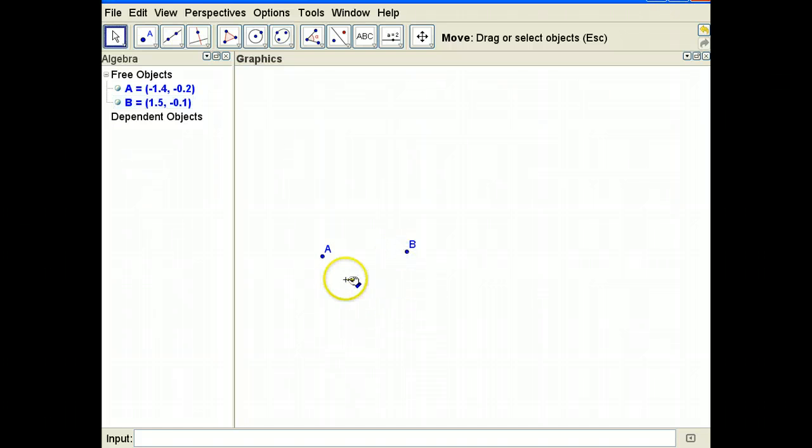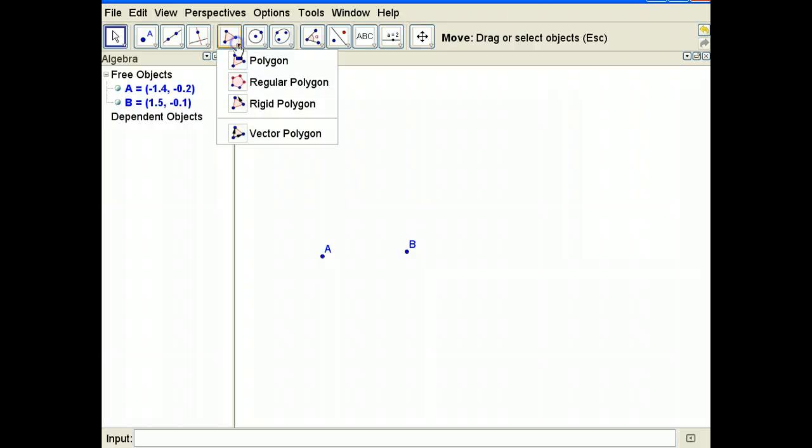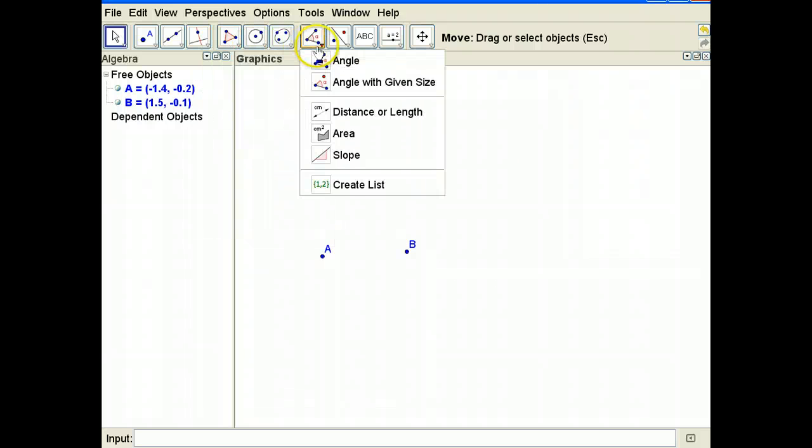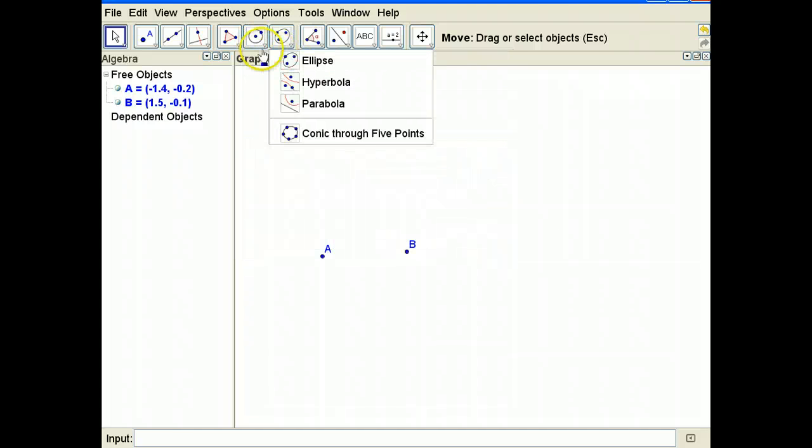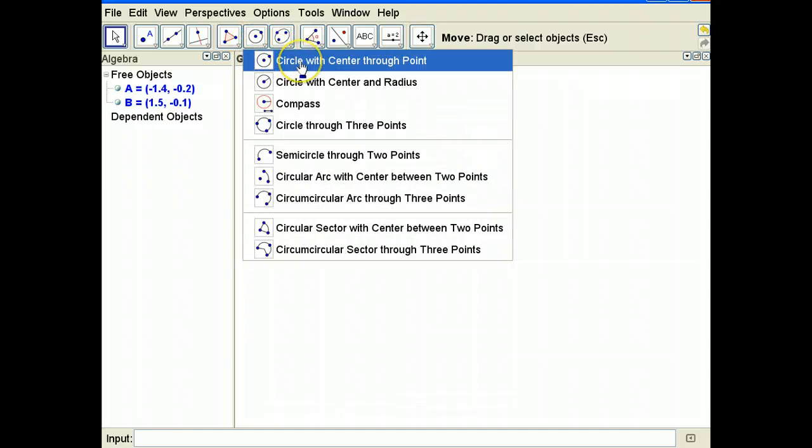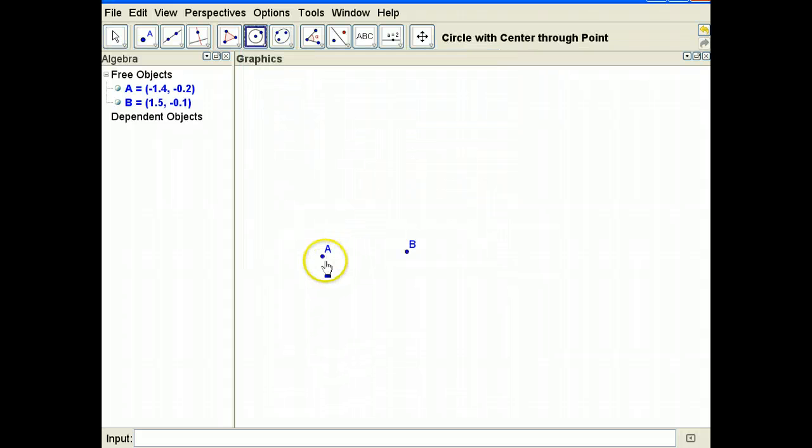Take your mouse and go up to the circle tool which is right here. If you click on them they give you even more options and the toolbar is organized by category. For this activity I just want to do a circle with a center going through a point. My center is at A, I will click on A and then I will click on B and that will create my circle.